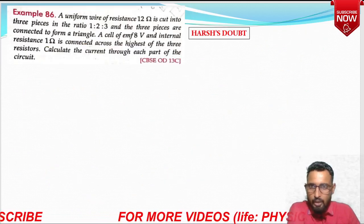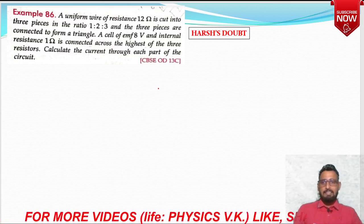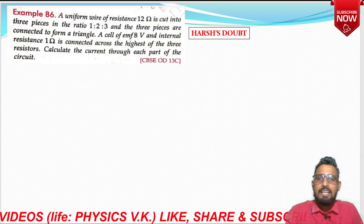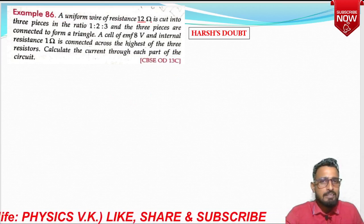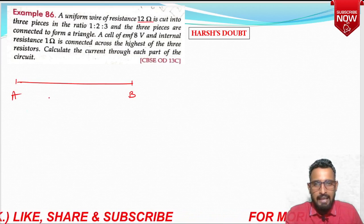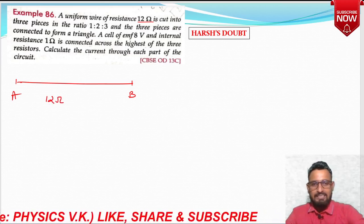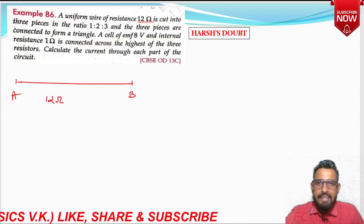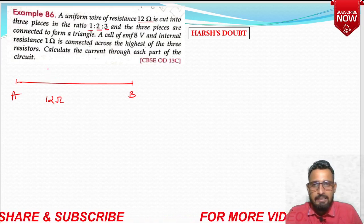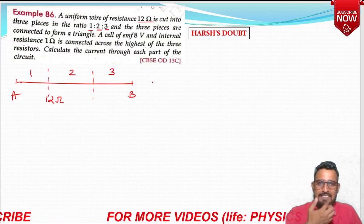Now the next question — a doubt from student Harsh. This question is from the All India 2013 compartment paper. A uniform wire of resistance 12 ohm — let's call it AB — has resistance 12 ohm. It is cut into three pieces in the ratio 1:2:3. Taking each part as X: X + 2X + 3X = 6X = 12, so X = 2. First section: 2 ohm, second: 4 ohm, third: 6 ohm. Total: 2 + 4 + 6 = 12 ohm.